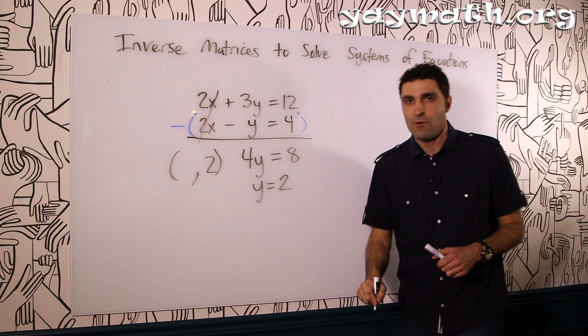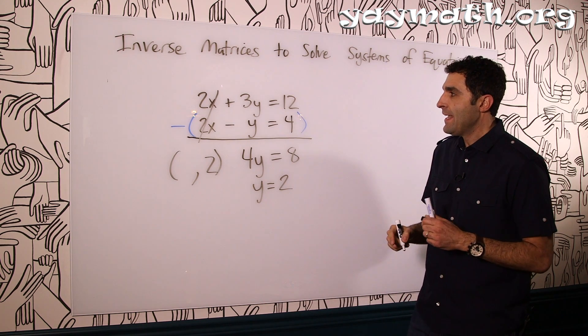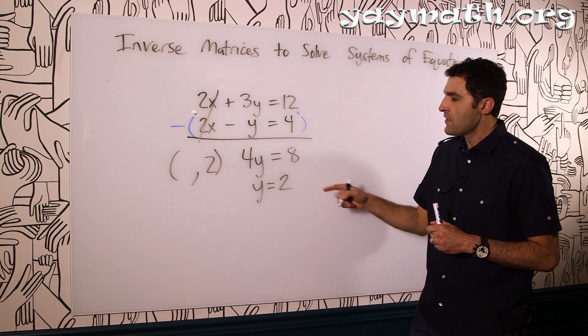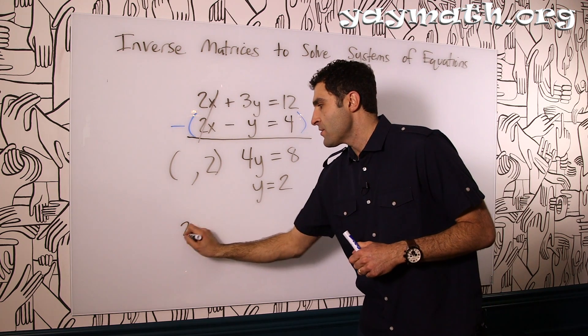So that means that these two lines definitely cross at something comma 2, x comma y. And in order to get the something, that x, we could plug y in. So let's say we wanted to plug y in to the first equation.